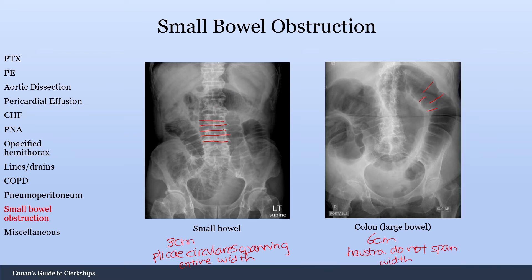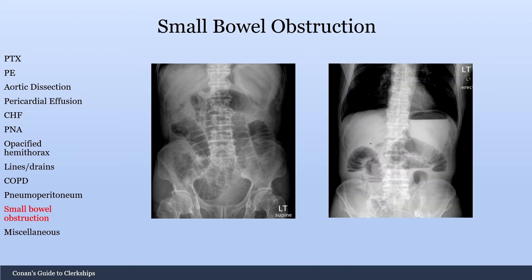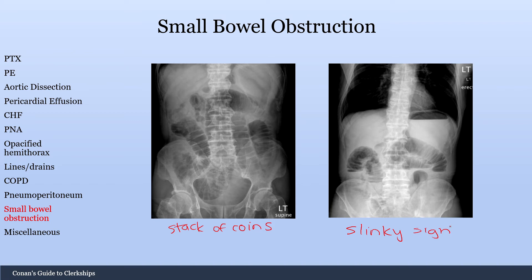Pretty easy to identify small bowel from large bowel — just check if the lines indenting are going the full width, which would be small bowel, or only part of the way, which would be large bowel. Here's an example of small bowel obstruction. Don't confuse the stomach bubble with free air under the diaphragm — this is just the stomach bubble. For small bowel obstruction you're going to see the stack of coins sign, and notice you don't see any colon — ascending, transverse, or descending. You only see small bowel. This is also called the slinky sign or step-ladder appearance. These are both signs of small bowel obstruction.